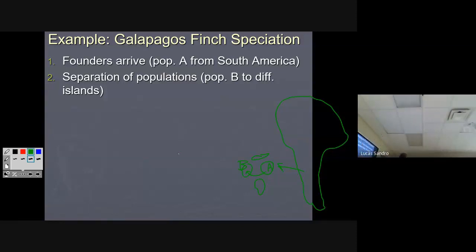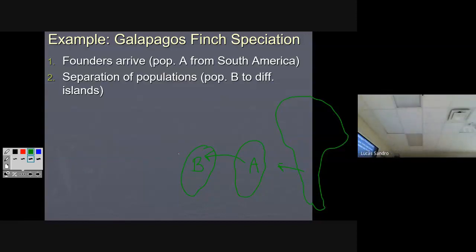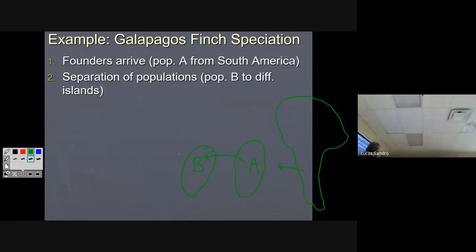On island B, it turns out there are seeds that are too big for about half the birds to crack open. Those birds die. The birds that survive are the ones who genetically have bigger, stronger beaks. So population A remains the same beak-wise, but population B gets bigger and bigger beaks. We call that natural selection on population B.